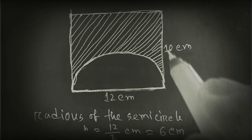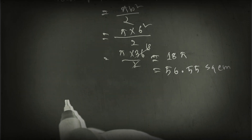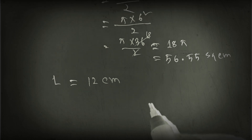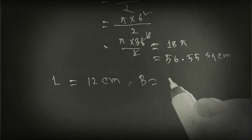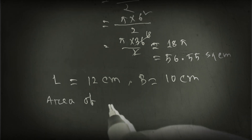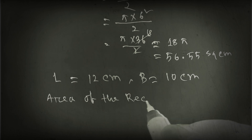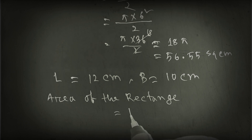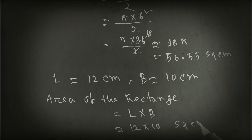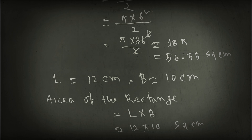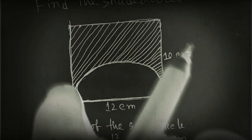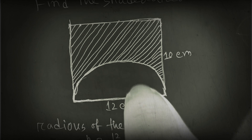Now we have to find the area of the whole rectangle. The length of the rectangle is 12 cm and the breadth is 10 cm, so area equals length times breadth, which gives us 120 square cm.